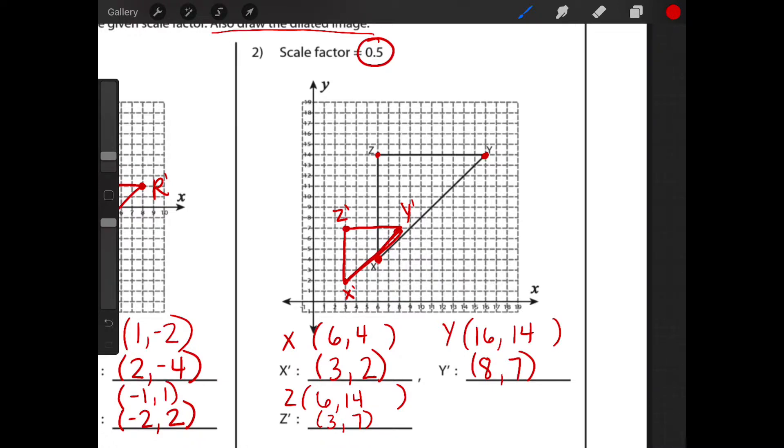So make sure that you're always plotting and labeling as you go. The way I can check to make sure I did it correctly is check the side length. So Z to Y is one, two, three, four, five, six, seven, eight, nine, 10 units. And then I'm going to compare it to Z to Y prime. One, two, three, four, five. Five is half of 10. So I did accurately dilate it.